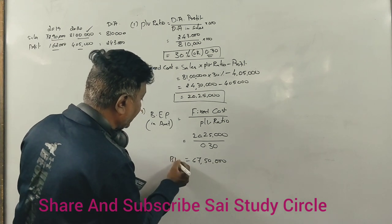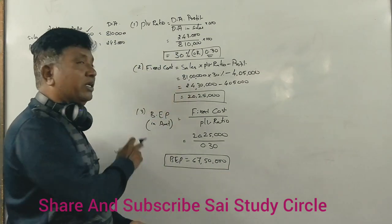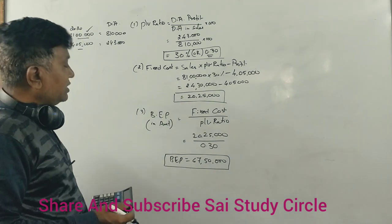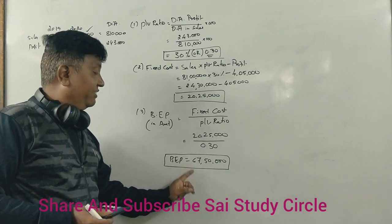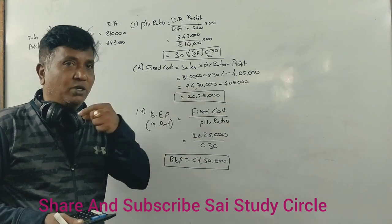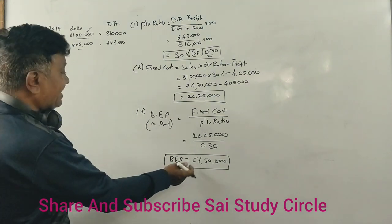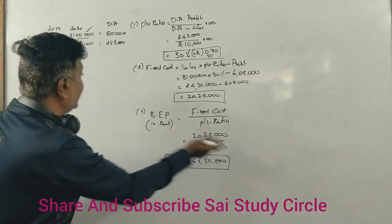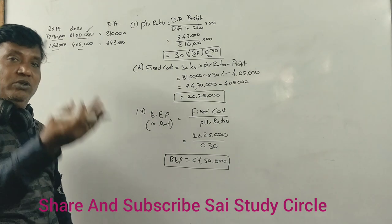The BEP is 67,50,000 rupees. This is the Marginal Costing technique. At sales of 67,50,000, there is no profit or loss. At sales of 72,90,000 there is a profit, and at sales of 81,00,000 there is further profit.